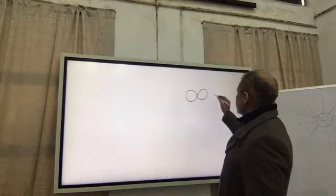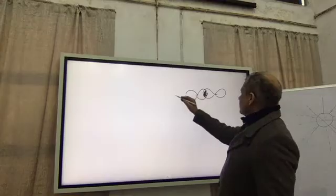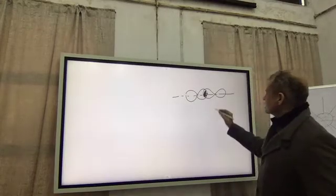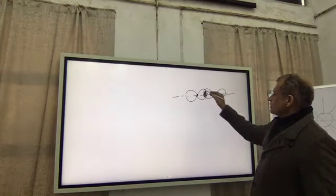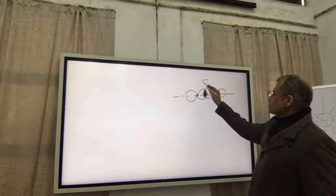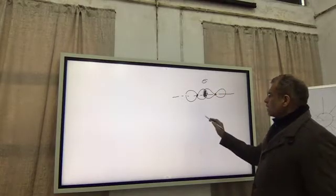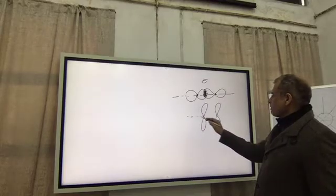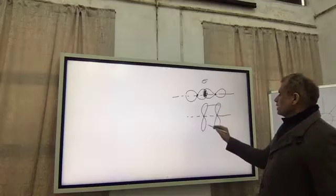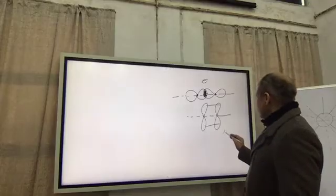If the atomic overlap is taking place along the internuclear axis - this is the nucleus 1, this is the nucleus 2, and overlap is like this - this was called sigma bond. And if the overlap is taking place like this, here and here, then it was called pi bond.